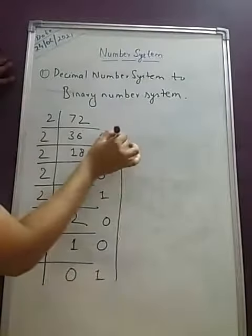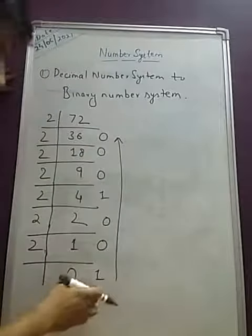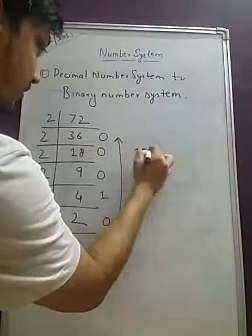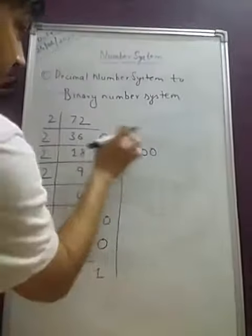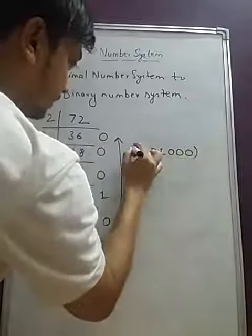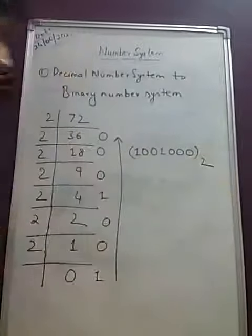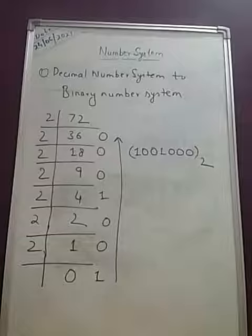So you have to start writing from this side and you have to go up side. So what you will be writing? 1, 0, 0, 1, 0, 0, 1, 0, 0, 0. So this is the binary equivalent of the decimal number 72.